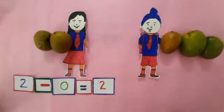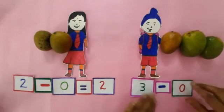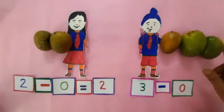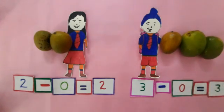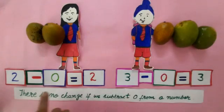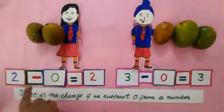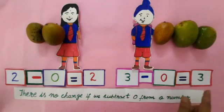Children, Winnie is having 3 mangoes and he did not give any mangoes to anybody. How many mangoes is he having now? 1, 2, 3 — he is having 3 mangoes. So children, there is no change. If we subtract 0 from a number: 2 minus 0 is equal to 2, and 3 minus 0 is equal to 3.